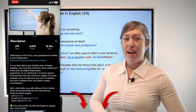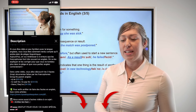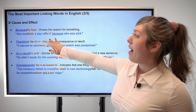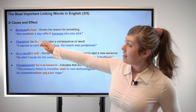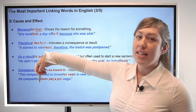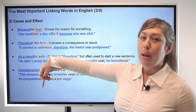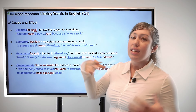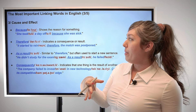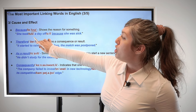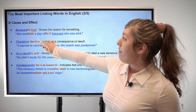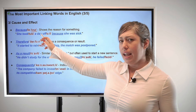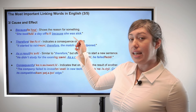So back to linking words. We're going to look at cause and effect linking words. Here we have 'because,' with emphasis on the second syllable, because. This shows us the reason for something. For example, she took a day off because she was sick. Why did she take a day off? The reason is she was sick.